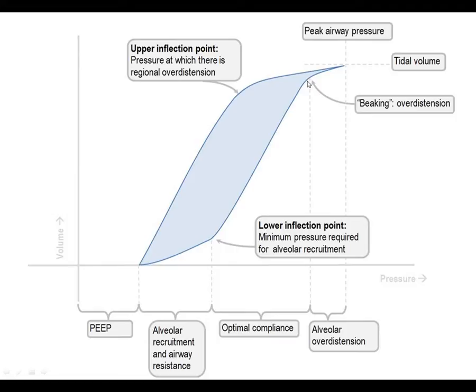This is also where we check our plateau pressures when doing bi-vent. This value on the curve tells us where our plateaus are, and we know we should be keeping our plateaus less than 30 cmH2O. The ARDSnet protocol reflects that.